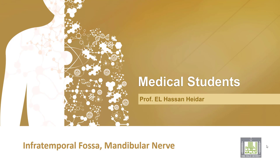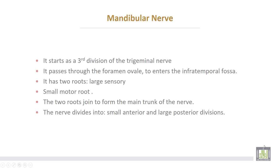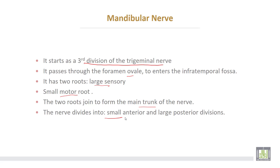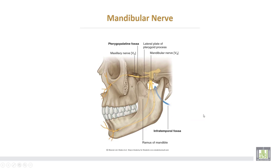The mandibular nerve and the infratemporal fossa. The mandibular nerve is the third division of the trigeminal nerve, which is the fifth cranial nerve. It passes through the foramen ovale to enter the infratemporal fossa. It has two roots: a large sensory and a small motor root. The two roots join each other to form the main trunk, which then divides into a small anterior division and a large posterior division.